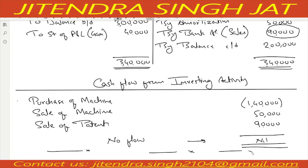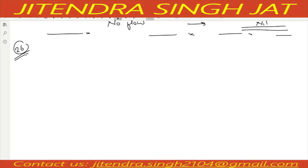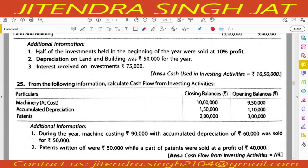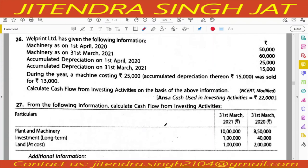Total: 140 minus 50 minus 90 equals nil — no flow from investing activity. I hope it is clear to everyone. Question number 26: WellPrint Limited has given opening balance of machinery, closing balance of machinery, opening and closing balances of accumulated depreciation. During the year, a machine costing 25 on which depreciation is 15 was sold for 13. Calculate cash flow from investing activities.